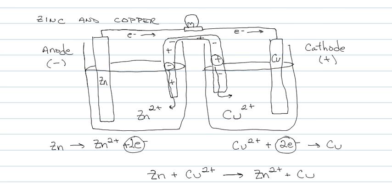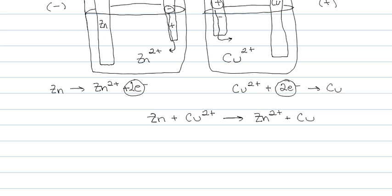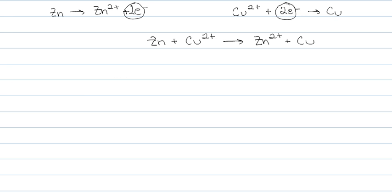That is it. So now what I want you to do is you're going to pause the video and draw a cell, a voltaic cell for aluminum and calcium. While you're drawing it, I'm going to draw it. And then when you come back, I should have it completely drawn. So pause the video.